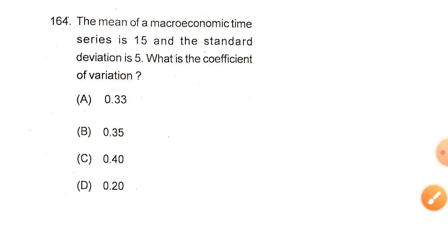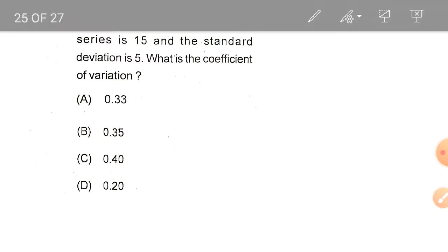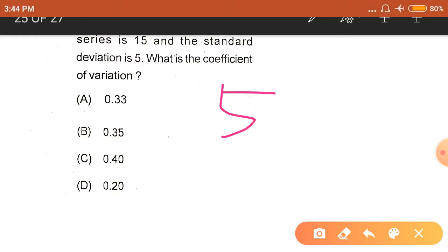The mean of a macroeconomic time series is 15, the standard deviation is 5. What is the coefficient of variation? This is 5 divided by 15, which is 0.33. The answer is A.